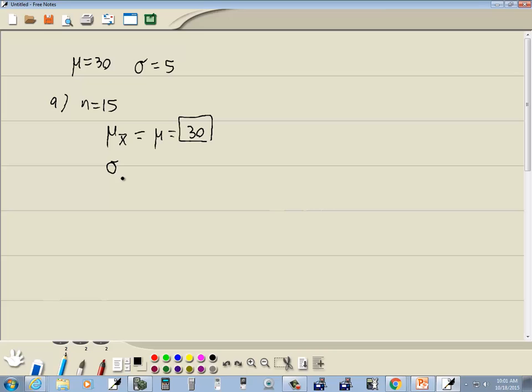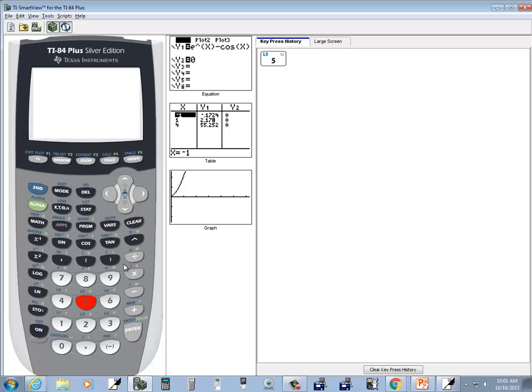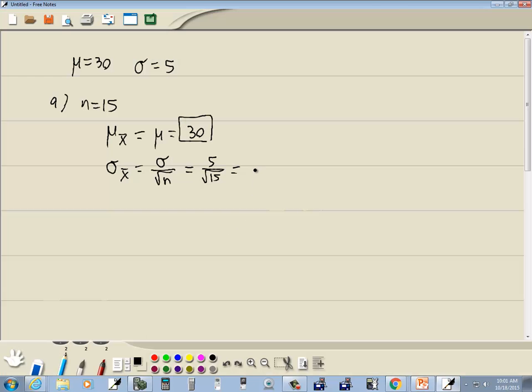We also want to find sigma sub x bar, which is equal to sigma divided by the square root of n. Sigma is 5 divided by the square root of 15. Let's see, 5 divided by the square root of 15, and we'll round it two decimal places. It would give us 1.29.